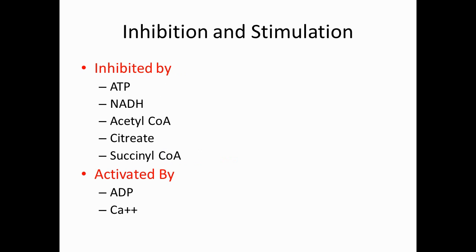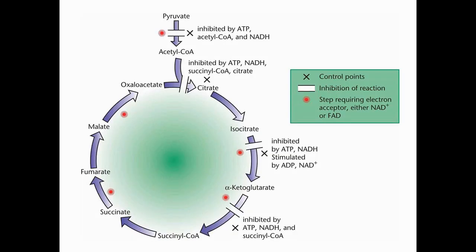The TCA cycle is inhibited by ATP, NADH, acetyl-CoA, citrate, and succinyl-CoA, and activated by ADP and calcium. Specifically: pyruvate to acetyl-CoA is inhibited by ATP, acetyl-CoA, and NADH; acetyl-CoA to citrate is inhibited by ATP, NADH, acetyl-CoA, and citrate; isocitrate to alpha-ketoglutarate is inhibited by ATP and NADH and stimulated by ADP and NAD+; alpha-ketoglutarate to succinyl-CoA is inhibited by ATP, NADH, and succinyl-CoA.